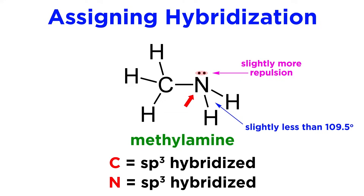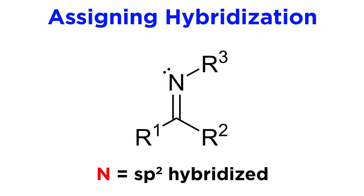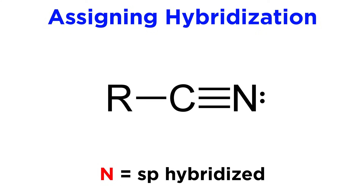In turn, the HNC bond angle will be slightly larger. Nitrogen will most frequently be sp3 hybridized, though it can be sp2 hybridized if it participates in a double bond, or sp hybridized if it participates in a triple bond.